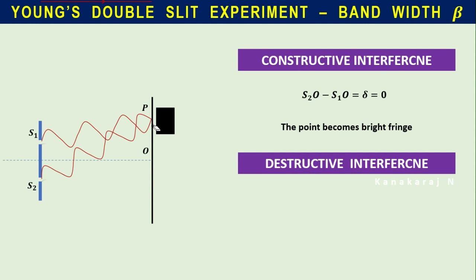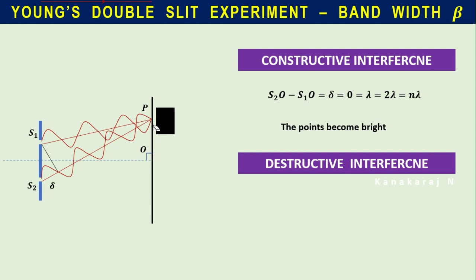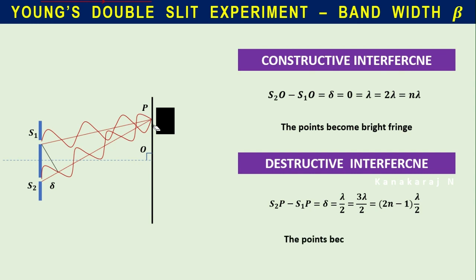You get a dark band. S2P is the first path, S1P is the second path, and the path difference is delta. It accommodates one half-lambda extra. When S2P − S1P = delta = λ/2, we get destructive interference. When this becomes 3λ/2, λ/2 plus λ, 2λ/2, and so on, the points become dark. In general, S2P − S1P = delta = (2n − 1)λ/2 means destructive interference — the points become dark.